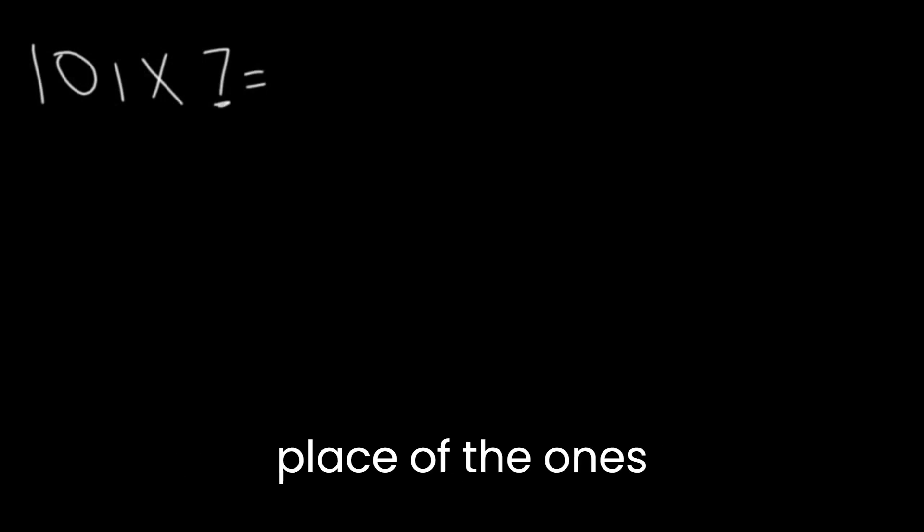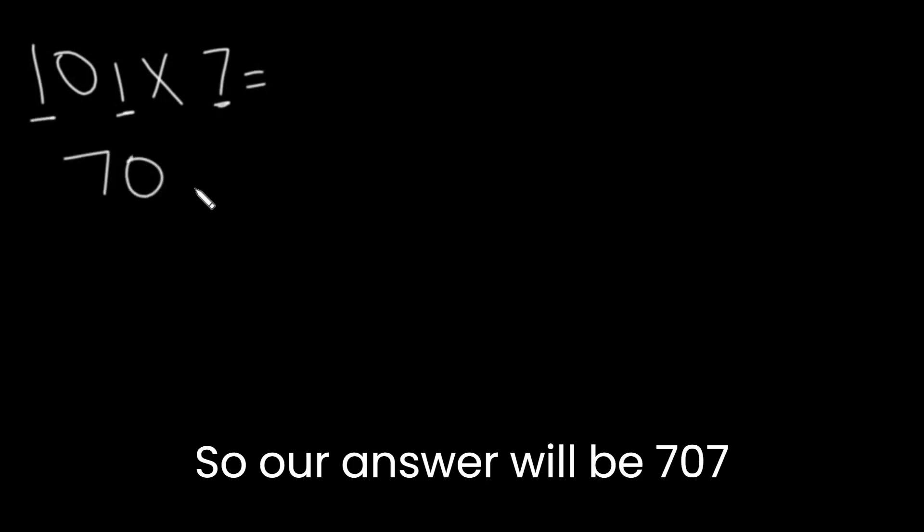Let's say we have 101 times 7. All we have to do is write the 7 in place of the ones. So our answer will be 707.